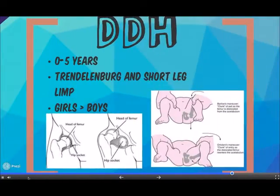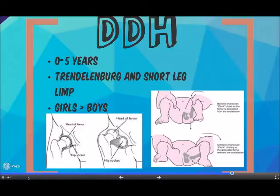Developmental dysplasia of the hip includes dislocation at birth and acetabular dysplasia. Dislocation at birth should be identified during routine neonatal examination using the Ortolani and Barlow tests. If the diagnosis is missed, the child may present with a Trendelenburg and a short leg limp.